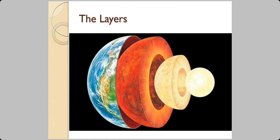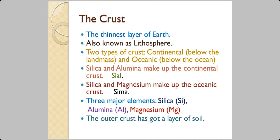This is a view of all the layers of Earth. The crust is the thinnest layer of Earth. We also call it as lithosphere. There are two types of crust: one is the continental, that is below the land mass, and the other one is oceanic, that is below the ocean.